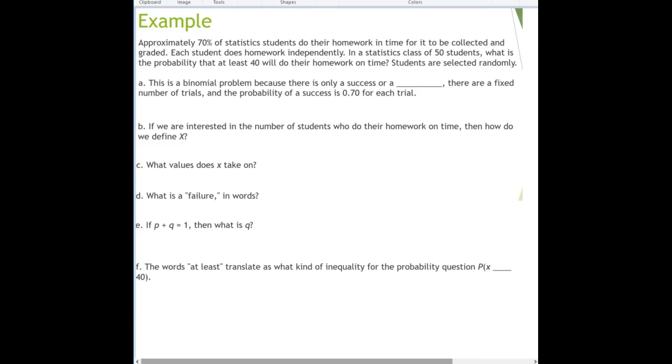Here's another example. Approximately 70% of statistics students do their homework in time for it to be collected and graded. Each student does homework independently. In a statistics class of 50 students, what's the probability that at least 40 will do their homework on time? Students are selected randomly.